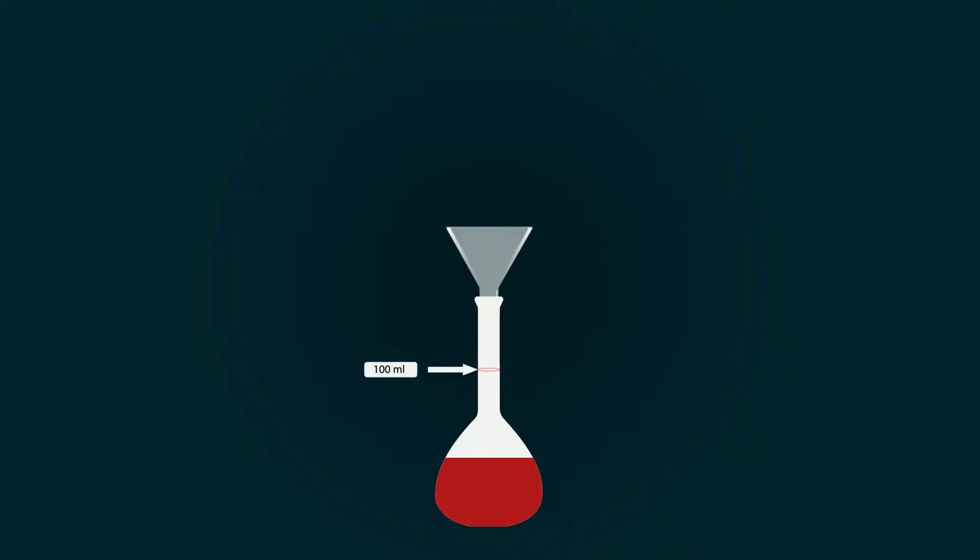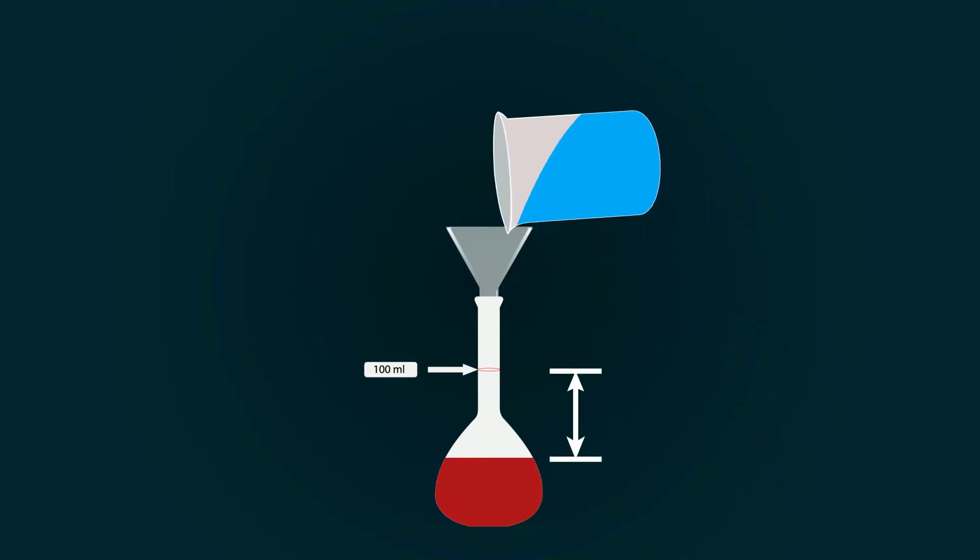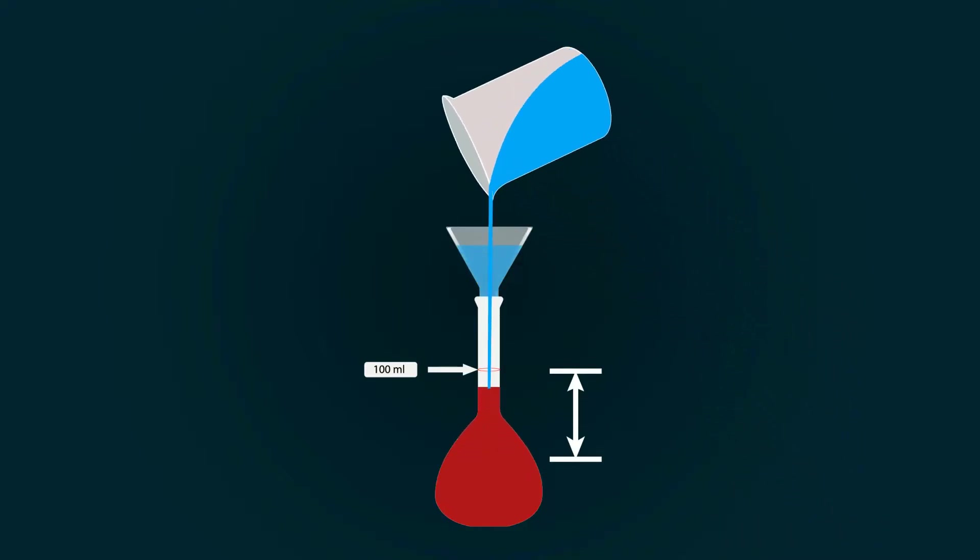You have to fill it up to the 100 milliliters point. For that, you have to add distilled water. So, take some distilled water into an empty beaker and pour it into the volumetric flask to fill it up to the 100 milliliters point.